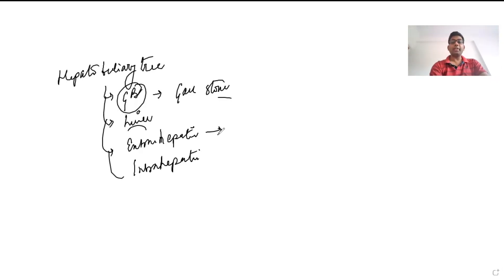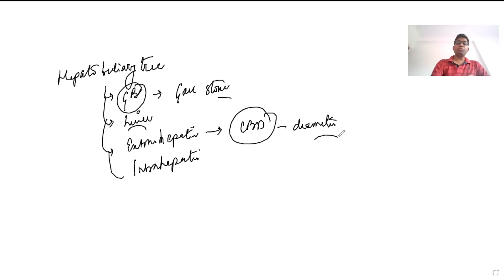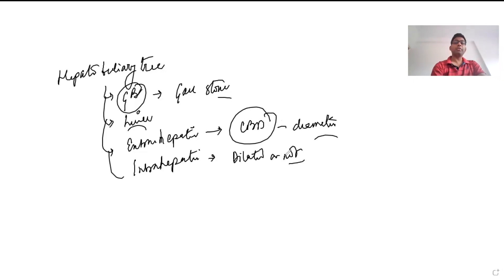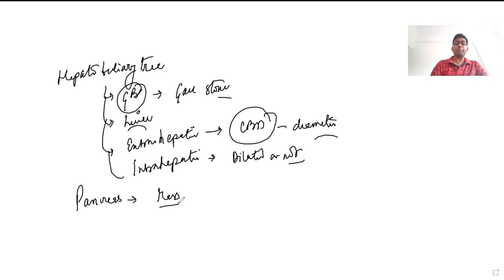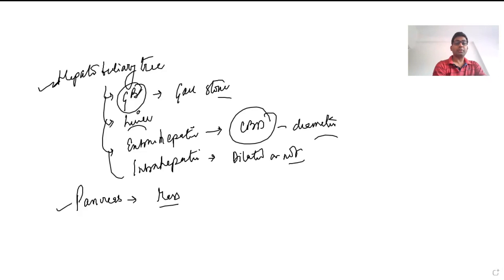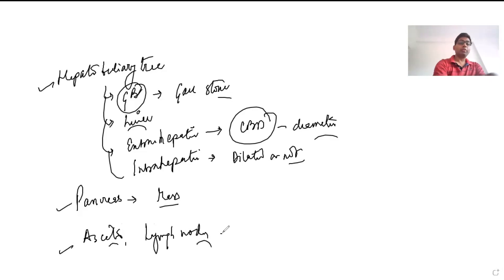We look at the CBD diameter, because if the CBD is dilated it may be due to stone or malignancy. We also check whether the intra-hepatic biliary radicals are dilated. Apart from this, we look at the pancreas — whether any mass is seen, its site, extent, and whether adjacent lymph nodes are enlarged. Although ultrasound is not very sensitive for a pancreatic mass, it can be used for screening as a first-line investigation. We also check for ascites and lymph nodes.